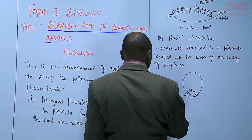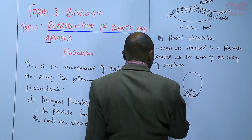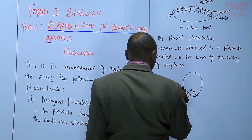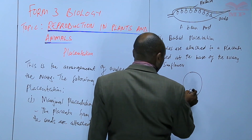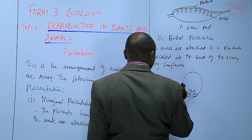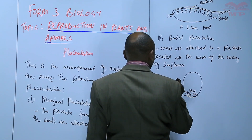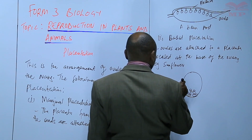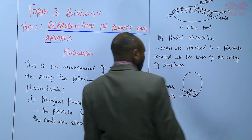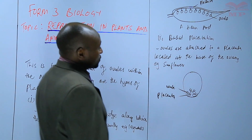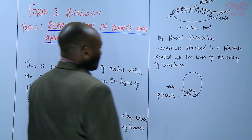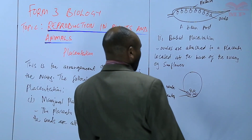That is the placenta, and then we have the ovule. So this is basal placentation — the name comes from the word 'base.'